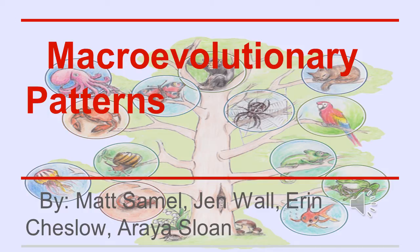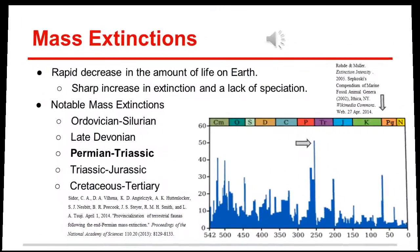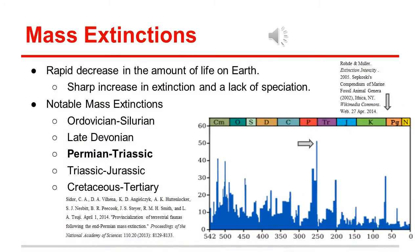Today, we will be talking about macroevolutionary patterns. A mass extinction is a rapid decrease in the amount of life on Earth. This occurs when there is a sharp increase in extinction rate and a lack of speciation.